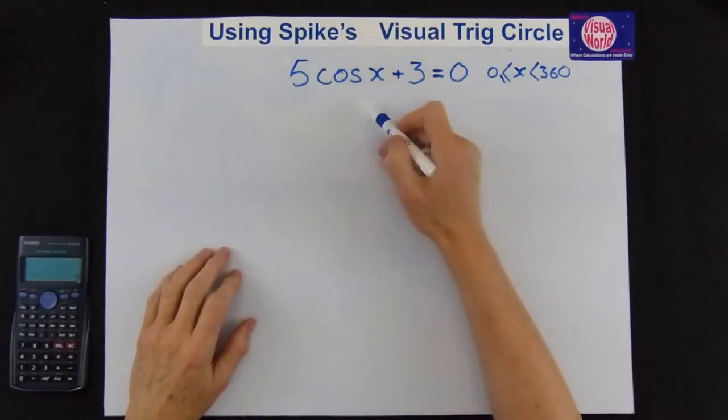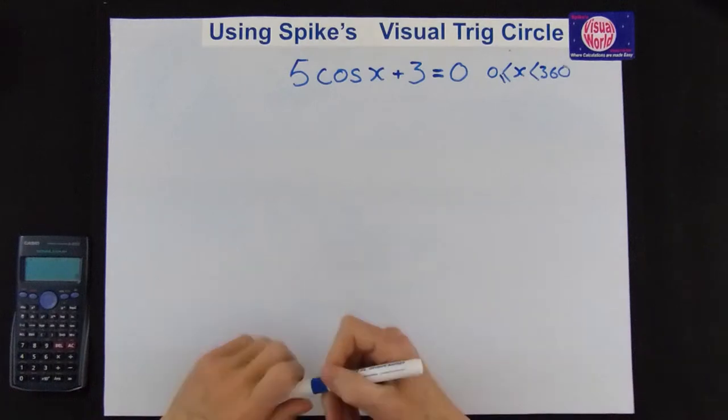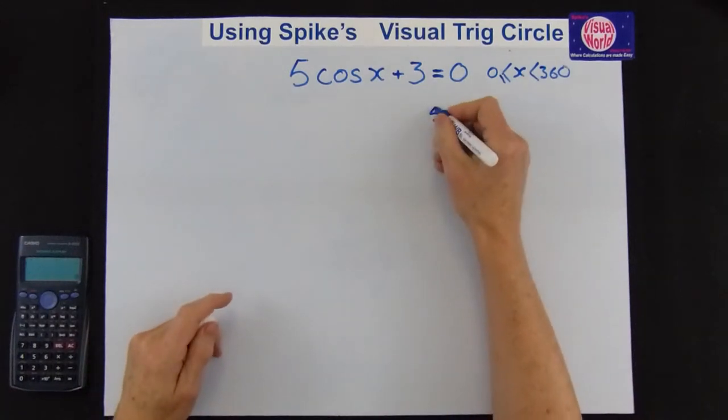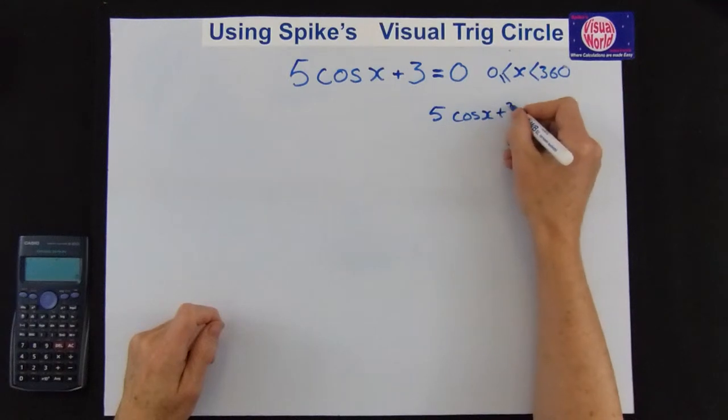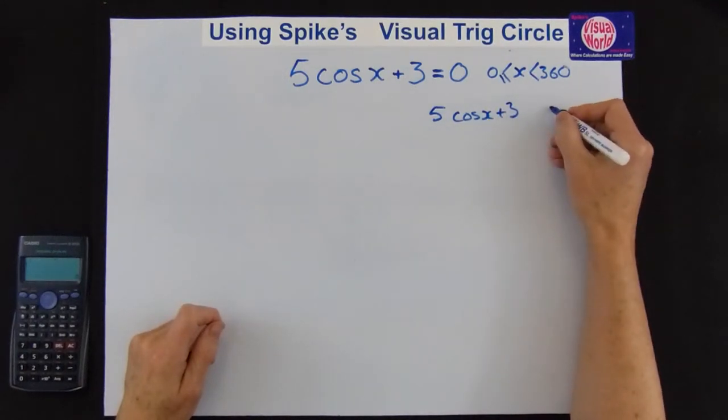The first stage is easy. We just treat the cos x as if it was x. So we write it down: 5 cos x plus 3. Now leave a space for working for the equals. Equals 0.